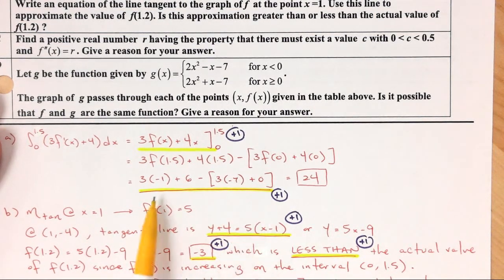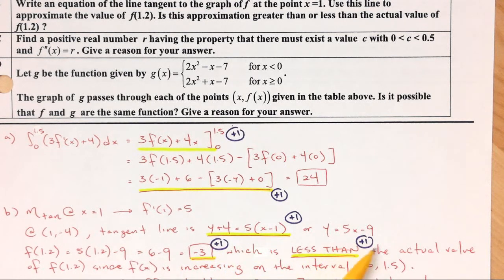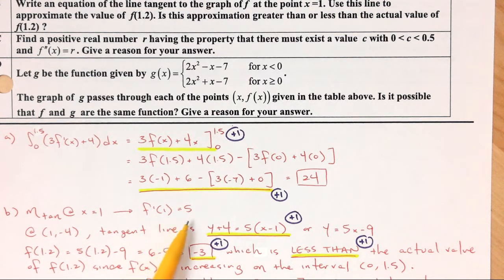Be careful — if you simplify and get the wrong number, you might lose credit. They might give partial credit if the setup is right but the arithmetic is wrong. For part B, they say write an equation of the line tangent to the graph of f. You want y minus y1 equals slope times x minus x1. The slope of the tangent line at x equals 1 is f prime of 1, which equals 5.